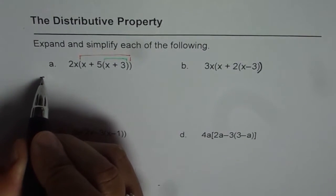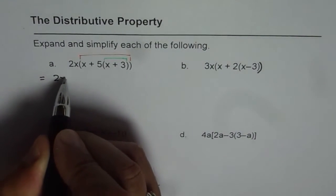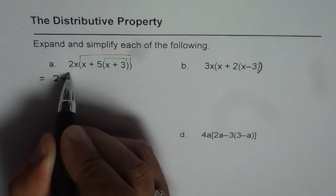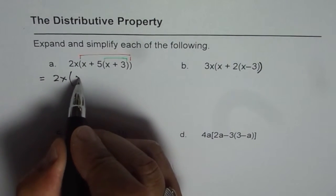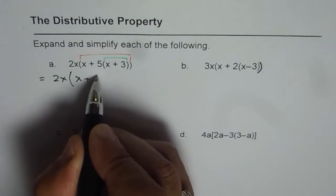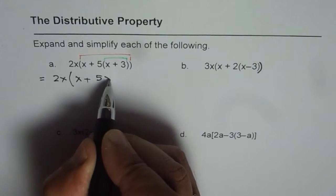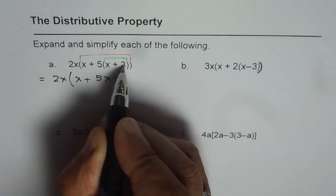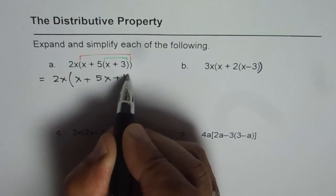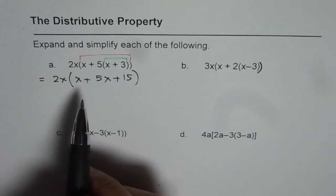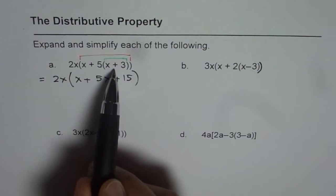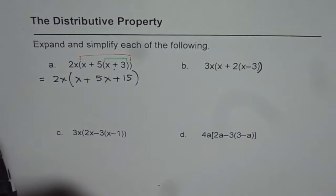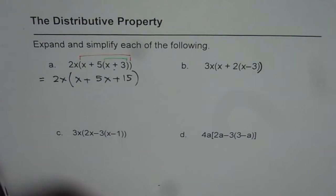This can be expanded as 2x, and then we have the outside brackets. Inside we have x plus 5 times x, and 5 times 3 which is 15. That is how we apply the distributive property to expand the inside bracket.